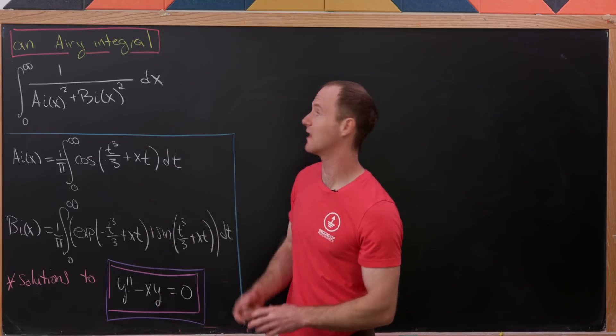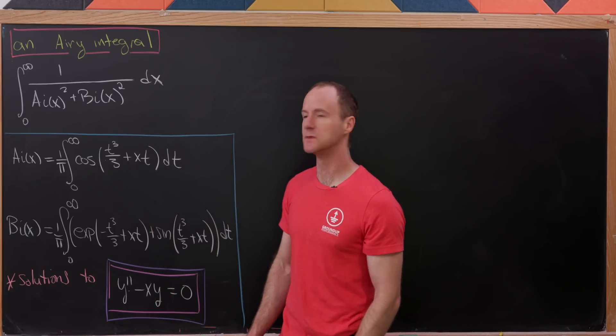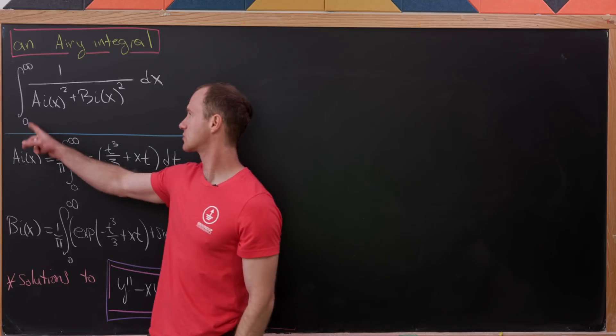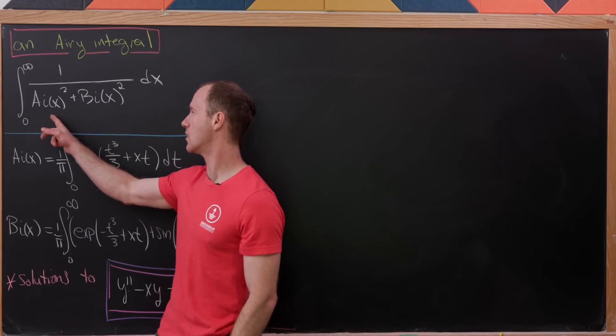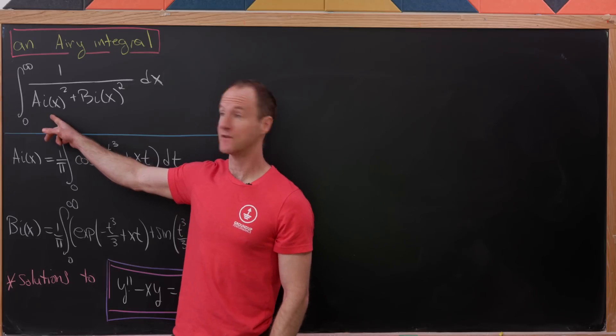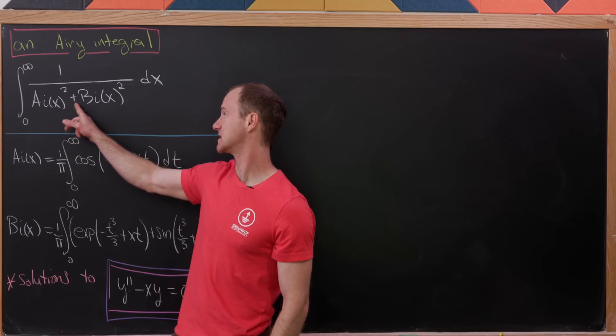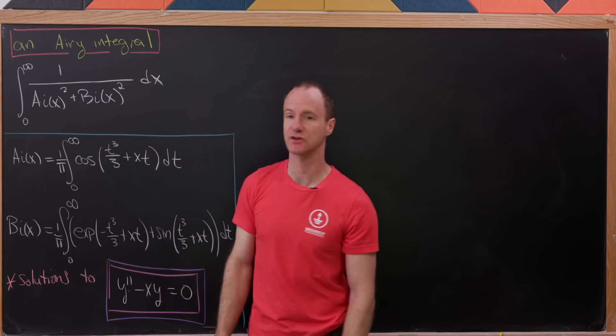Today we're going to calculate something that I'll call an Airy integral. So what is it? It's the integral from 0 to infinity of 1 over the Airy function AI squared plus the Airy function BI squared dx.